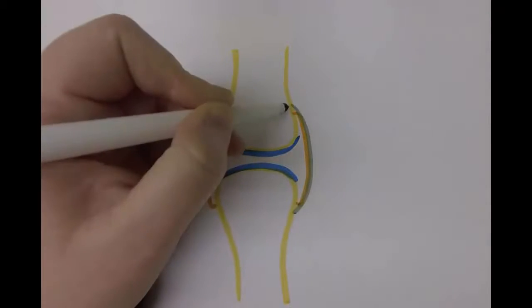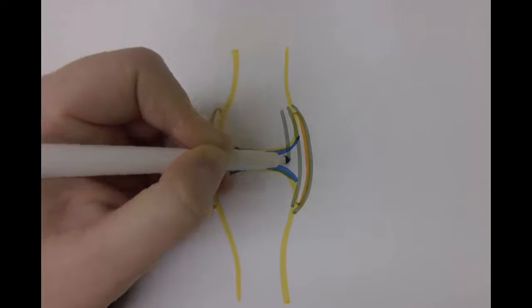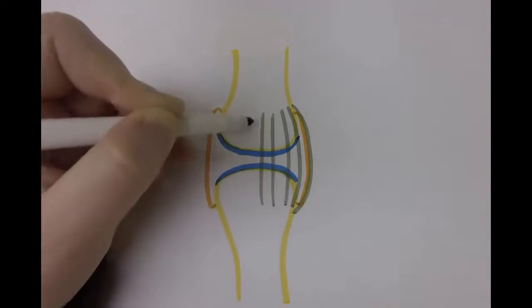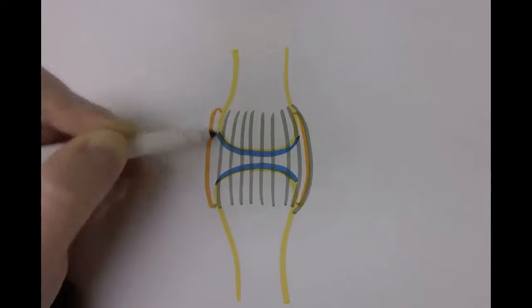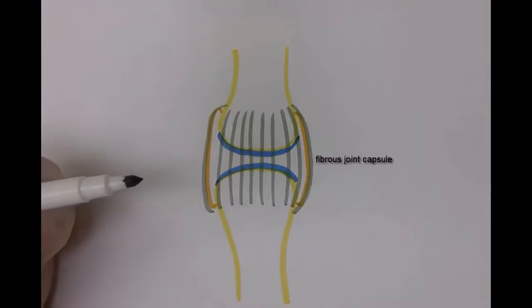Now I'm going to go ahead and sketch in the fibrous joint capsule which surrounds all of the structures we've just talked about. This will surround the ends of the bones on all sides, binding them together.